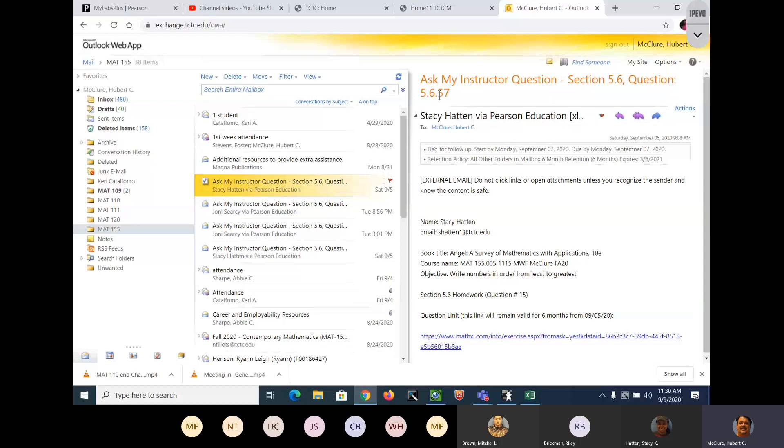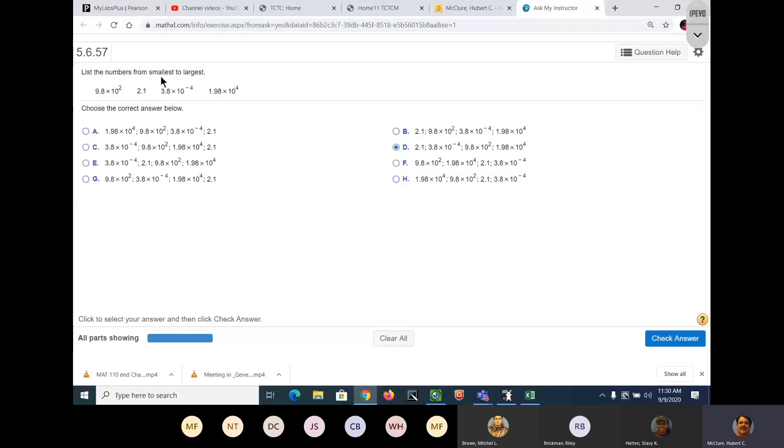5.6, 57 slash 15. List the numbers from smallest to largest. Let's just write them out. I'll tell you right now, this is not a test question I would pick, but I haven't seen this question before in this class, so this is a new question. The second thing I want to tell you is this is 100% a standardized test question. I've actually seen this question on a standardized test.